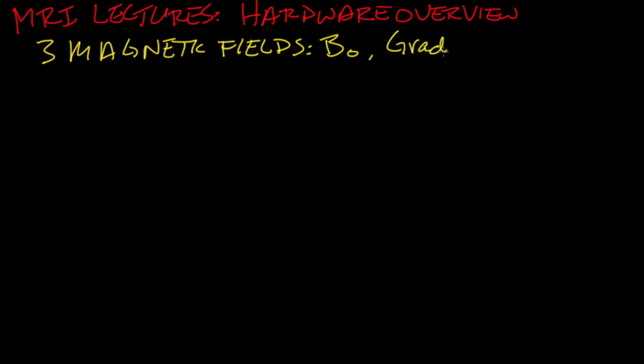Welcome to this series of lectures on Magnetic Resonance Imaging. This lecture will be a hardware overview. Here we'll talk about how and why the scanner makes three magnetic fields: the B0 or main field, the gradient fields for spatial encoding, and the B1 or RF fields.